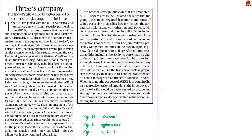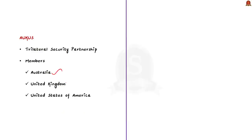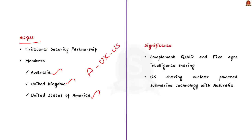Now let us take up this editorial. It mentions a trilateral security partnership for the Indo-Pacific region between Australia, the United Kingdom, and the United States of America — thus named AUKUS. There are two important significances for this trilateral alliance. First, it complements already existing Indo-Pacific cooperations like the Quad and the Five Eyes intelligence cooperation.